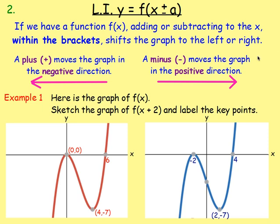After that, we have y equals f of x plus or minus inside the brackets. If it's within the brackets, it'll shift the graph to the left or to the right. Remember, a negative moves the graph in the positive direction. And a positive moves the graph in the negative direction. So with this example here, you have f of x plus 2. So the plus moves the graph to the left in the negative direction two places. So you subtract 2 from all the x coordinates. And the y values will just stay as they are.